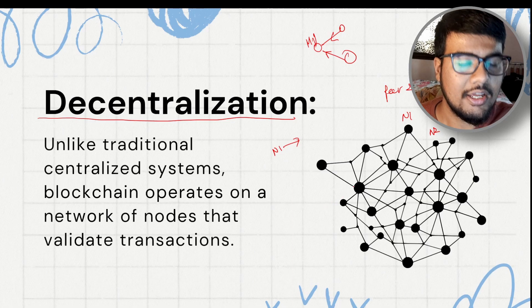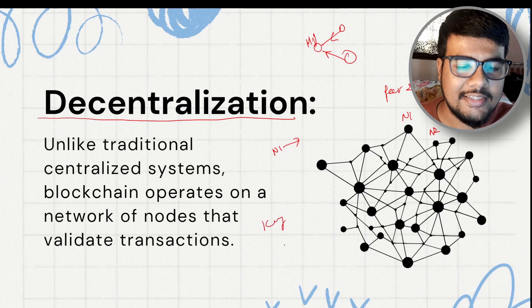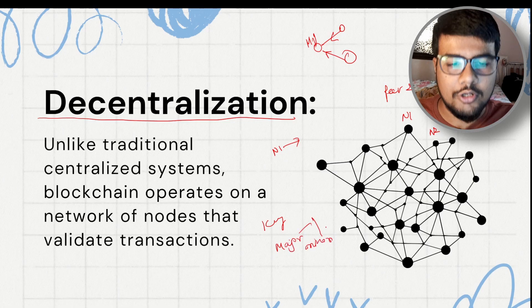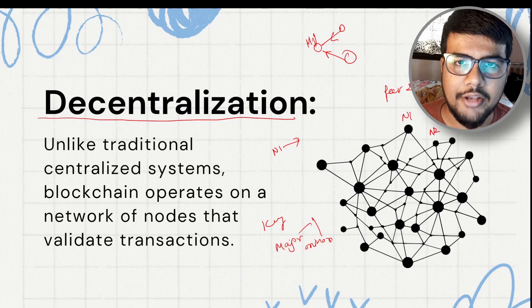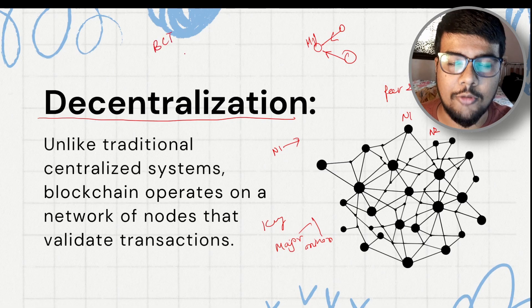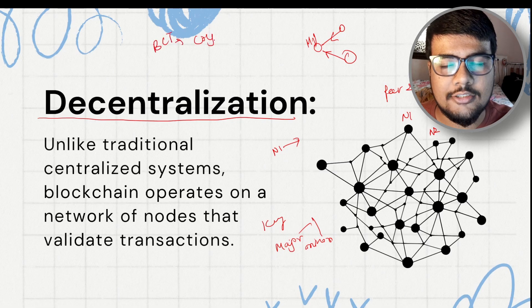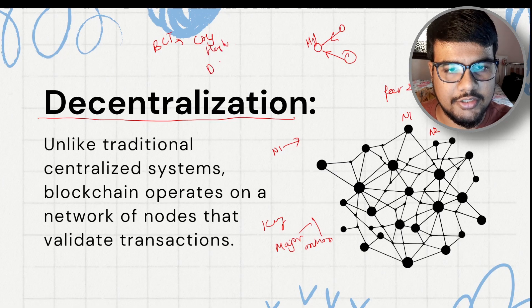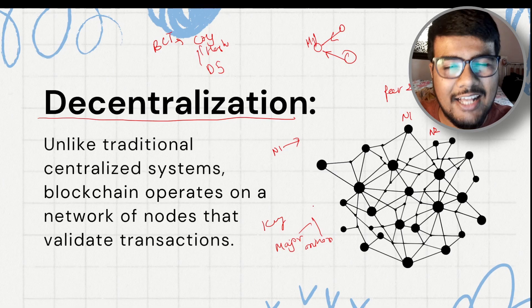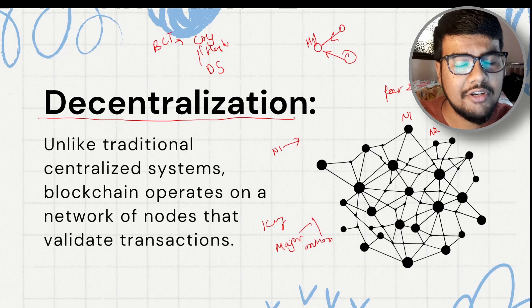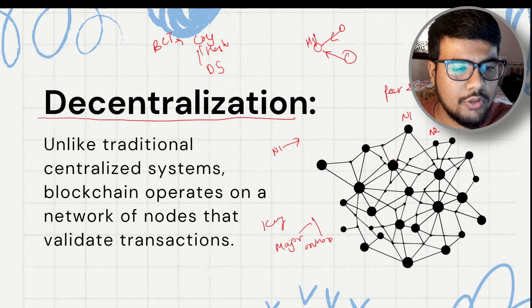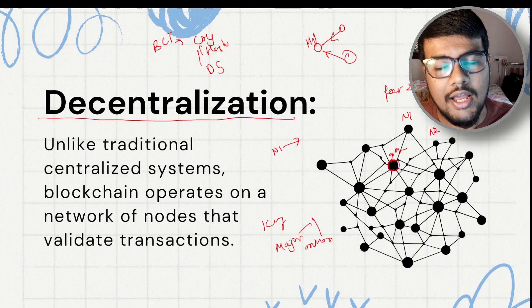A key point: there are major nodes and minor nodes. Both do validation, but major nodes have more power and validate digital signatures. Blockchain technology also has cryptographic aspects: hashing and digital signatures come under cryptography. Major nodes verify whether a signature is genuine and belongs to a real person. The big nodes are major nodes, the small ones are minor nodes, and everyone is connected — maintaining full transparency.